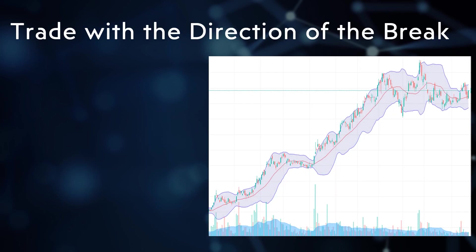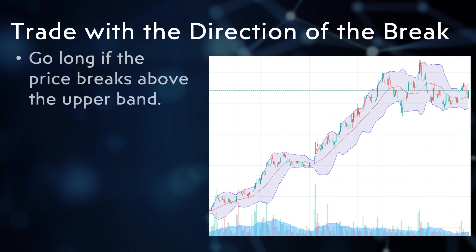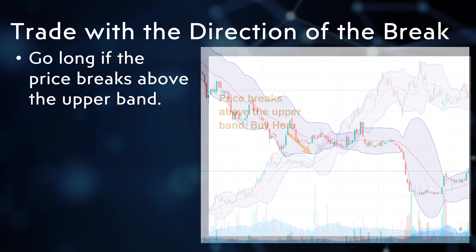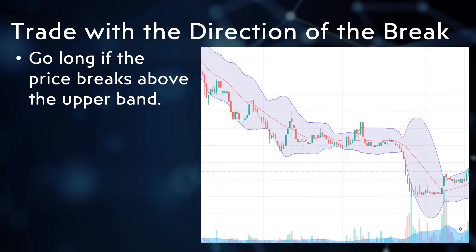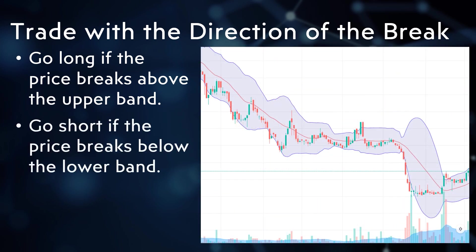Trade with the direction of the break: if the price breaks above the upper band, go long. In this chart, the correct entry is the price breakout after the Bollinger contraction. If the price breaks below the lower band, go short.